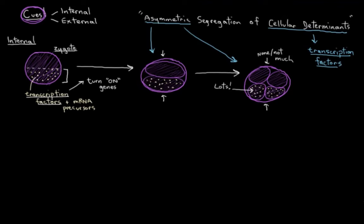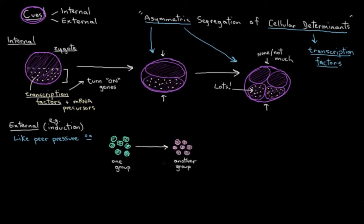But the second way to specialization that I'll mention is called inductive signaling, or just induction. And induction is kind of like really strong encouragement, almost like peer pressure. Where one cell, or actually usually a group of cells, can induce another group of cells to differentiate by just using some signals.